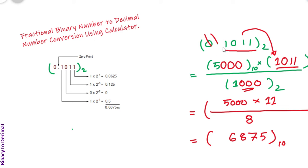Since we are using a fractional binary number, we have to put here zero point because we are trying to convert this binary number into the corresponding decimal number. So in this tutorial, I think all of you got this tricky point — how we can convert the fractional binary number into the corresponding decimal number.